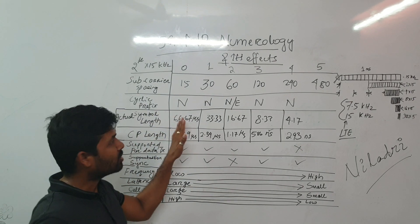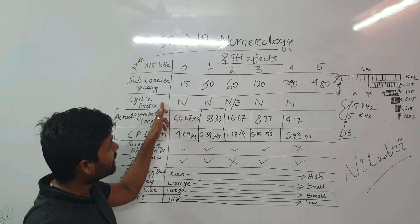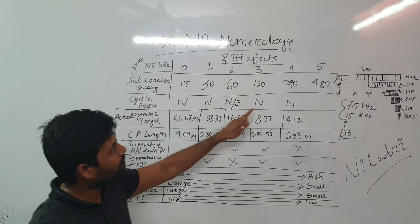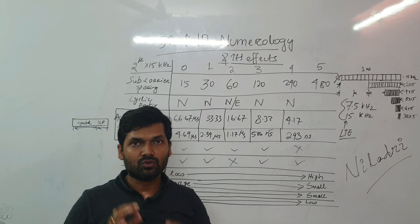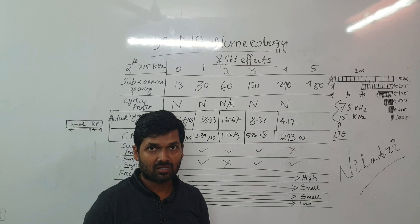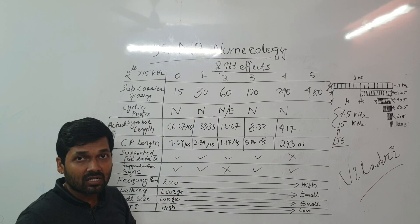So let's focus now on the table. So cyclic prefix for 15, 30, 120 and 240, we are using normal cyclic prefix.